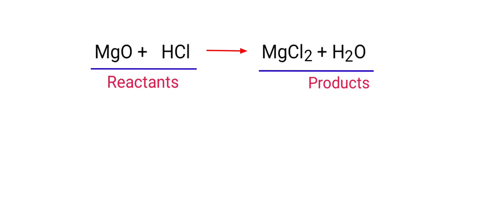In this equation the reactants are Magnesium Oxide and Hydrogen Chloride and the products are Magnesium Chloride and Water. If you look at this equation, the equation is not balanced.